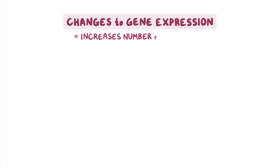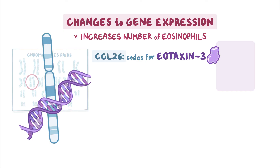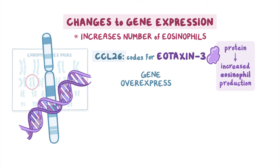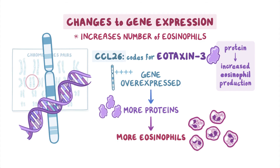Additionally, changes to gene expression appear to play a role in increasing the number of eosinophils in a person with EOE. A primary gene involved in people with EOE is CCL26, which encodes for eotaxin-3. Eotaxin-3 is a protein that triggers increased eosinophil production, and the gene is often overexpressed, meaning it is used to make more proteins than usual in people with eosinophilic esophagitis. When eotaxin-3 makes more proteins, those proteins trigger more eosinophils to be recruited to the esophagus, resulting in the increased number of eosinophils present in people with EOE.